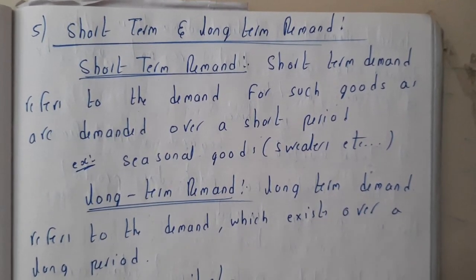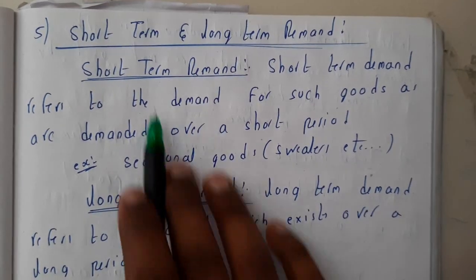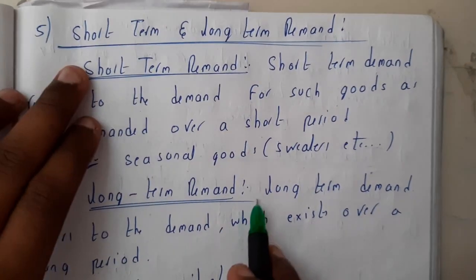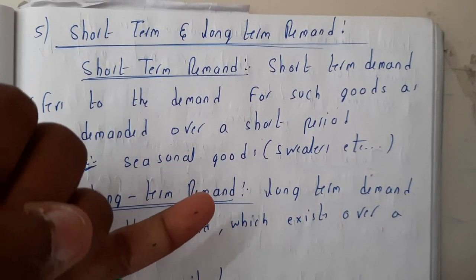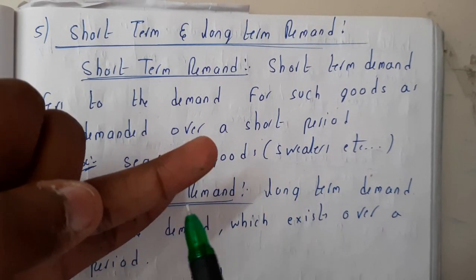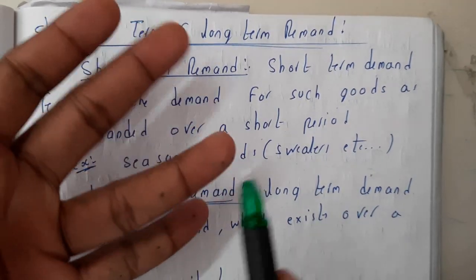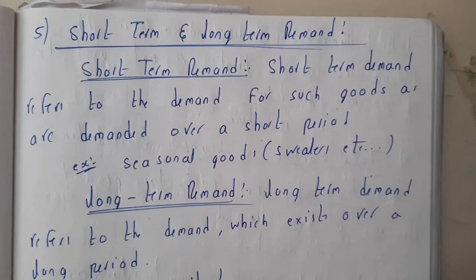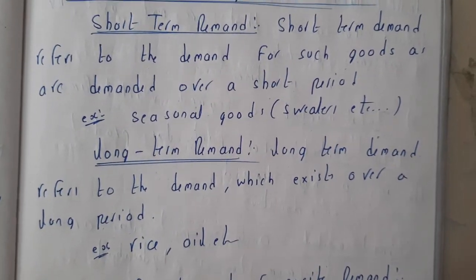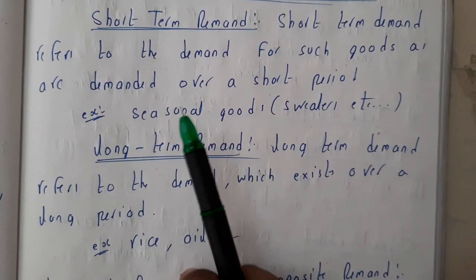We also have short-term and long-term demand. The best example for short-term demand is that in the rainy season there will be high demand for raincoats and umbrellas, whereas in winter season there will be high demand for sweaters — these are seasonal goods. Long-term demand includes food, which we continuously demand in every season regardless of the time.